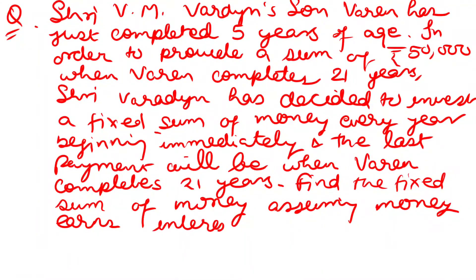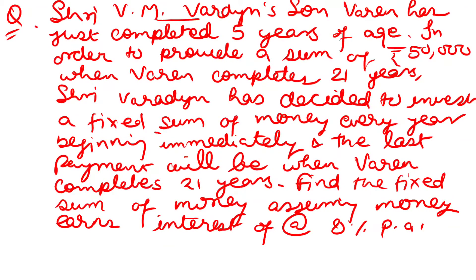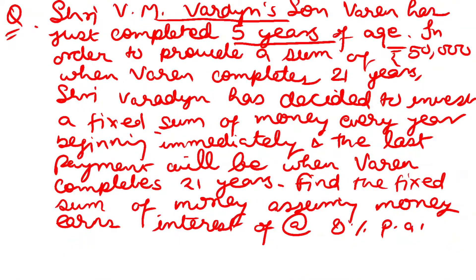So find the fixed sum of money assuming money earns an interest at the rate of 8% per annum. Now when Mr. Vardyam's son was 5 years old and then he was 21 years old, you will have to find the difference in this time period. So 21 minus 5, that is 16 years.